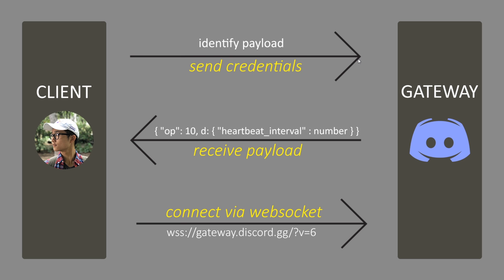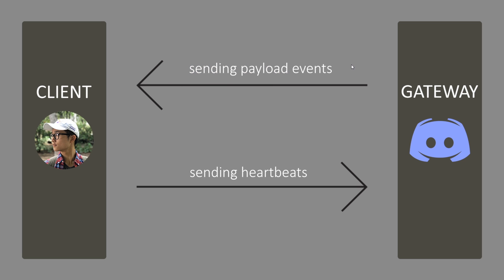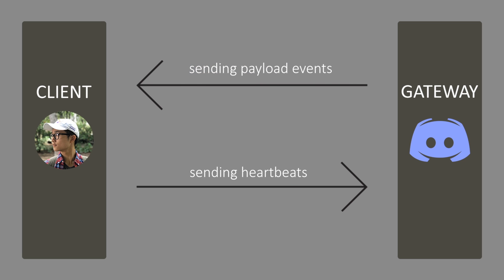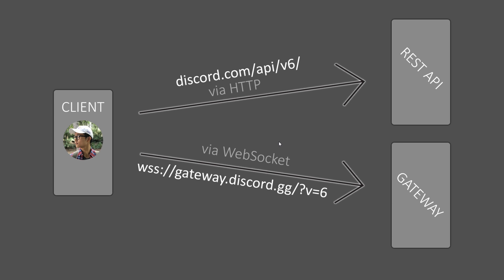Once we receive that payload, we then need to send our credentials — this is where we identify ourselves. We need to tell Discord we have a valid bot token to interact with the platform, and we send that in an identify payload. Once we do that, the Discord gateway validates everything, and if your token is correct, they send a ready event indicating your bot has successfully logged in. From there, you just need to make sure you're sending heartbeats every number of seconds, based on the heartbeat interval. Once connected, this bi-directional communication means whenever an event happens, the gateway fires that event and we receive it through the WebSocket client.